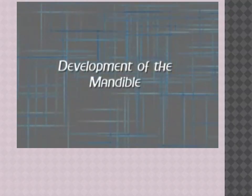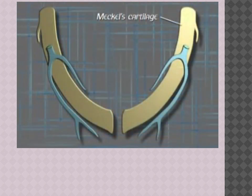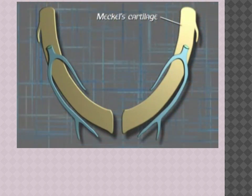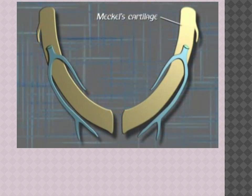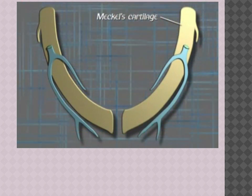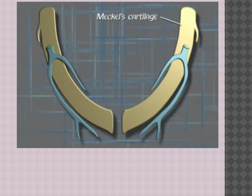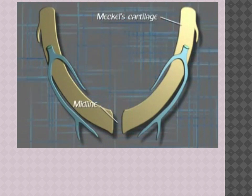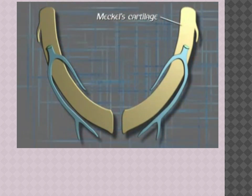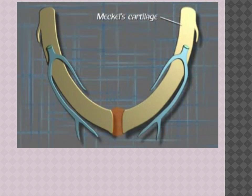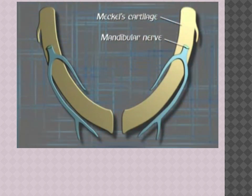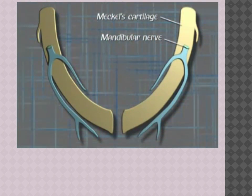In humans, Meckel's cartilage has a close positional relationship to the developing mandible but makes no contribution to it. At six weeks of development, this cartilage extends as a solid hyaline cartilaginous rod surrounded by a fibrocellular capsule. It extends from the developing ear region to the midline of the merged mandibular processes. The cartilage from each side does not meet at the midline — they are separated by a thin band of ecto-mesenchyme.